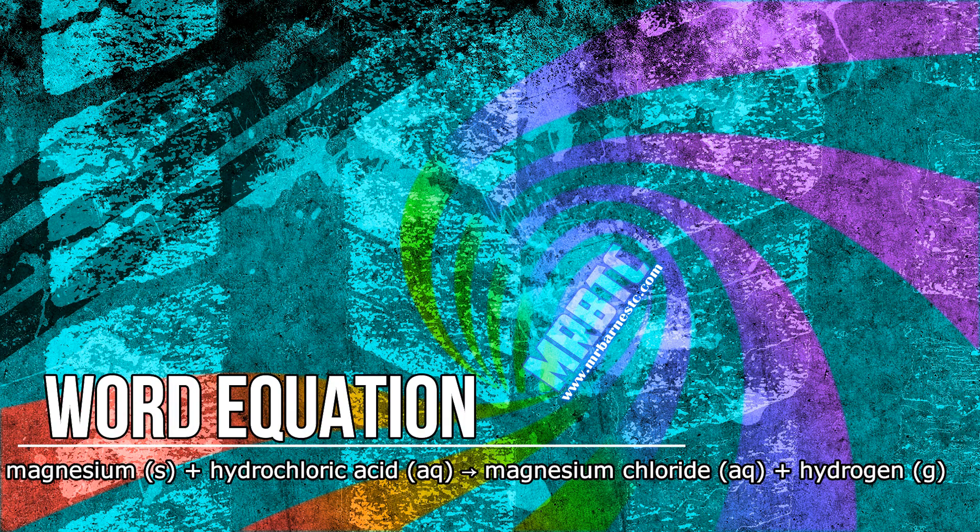So what we're going to start off with then is if you're given a word equation, so for example magnesium plus hydrochloric acid gives you magnesium chloride and hydrogen with the state symbols, what do you see?